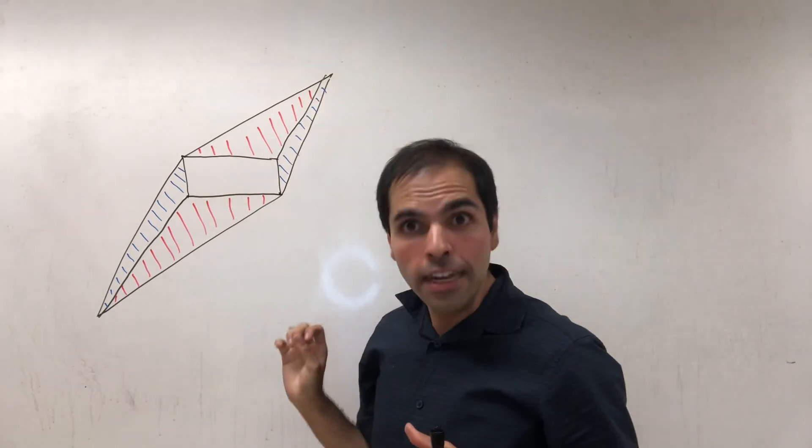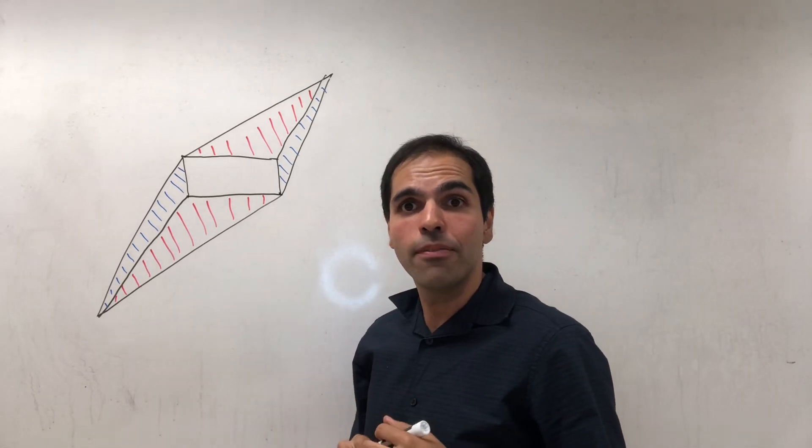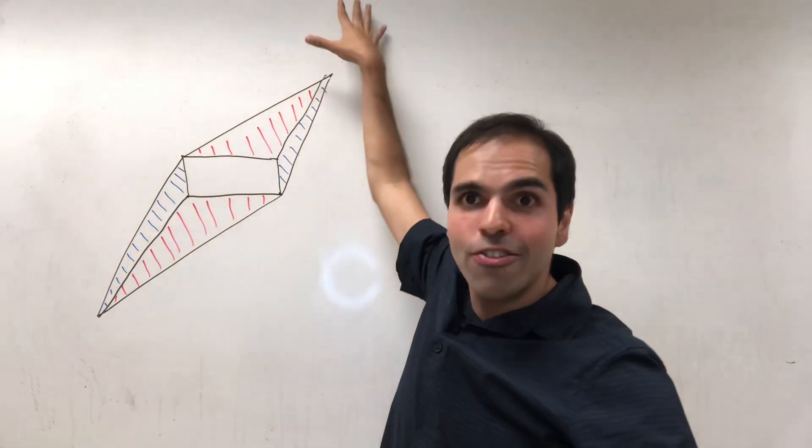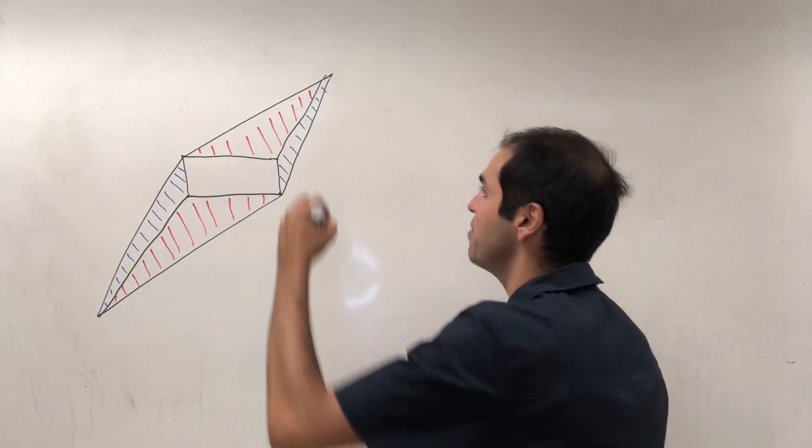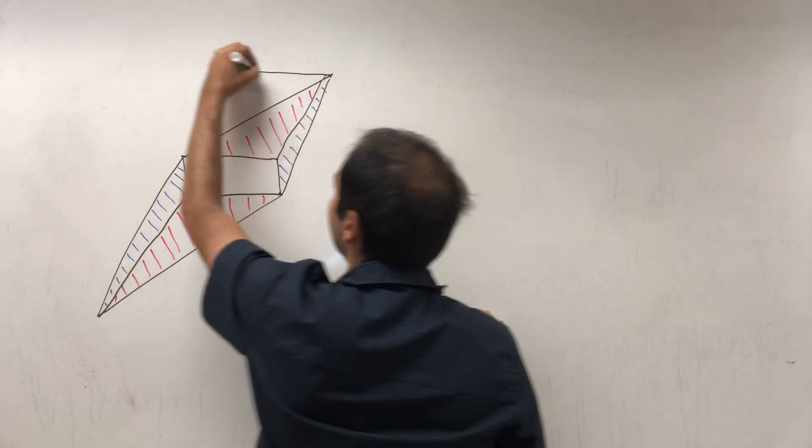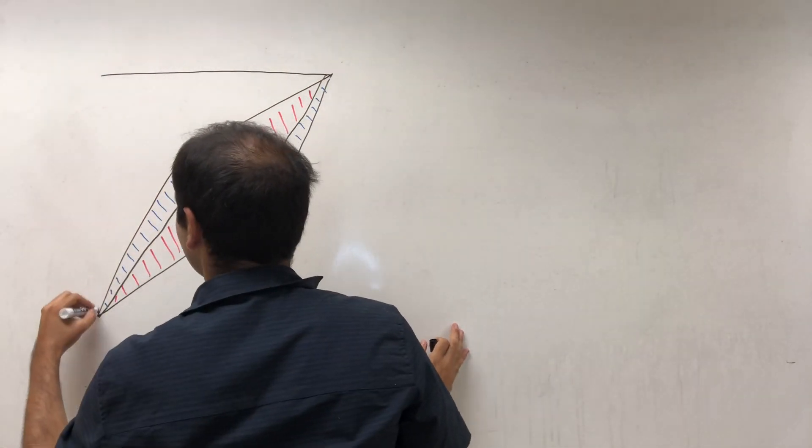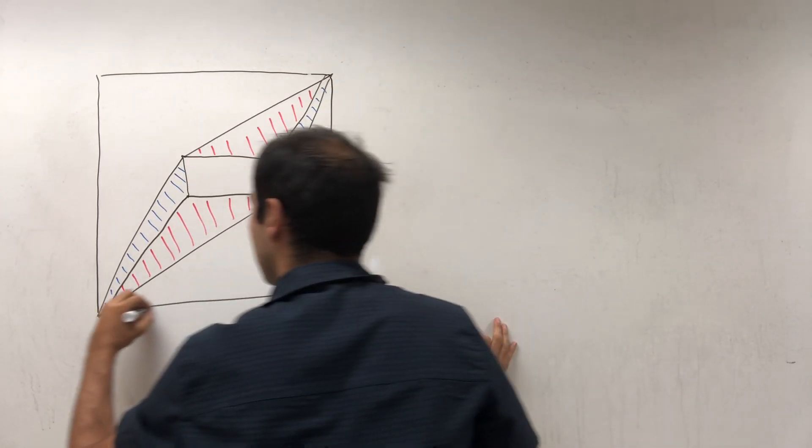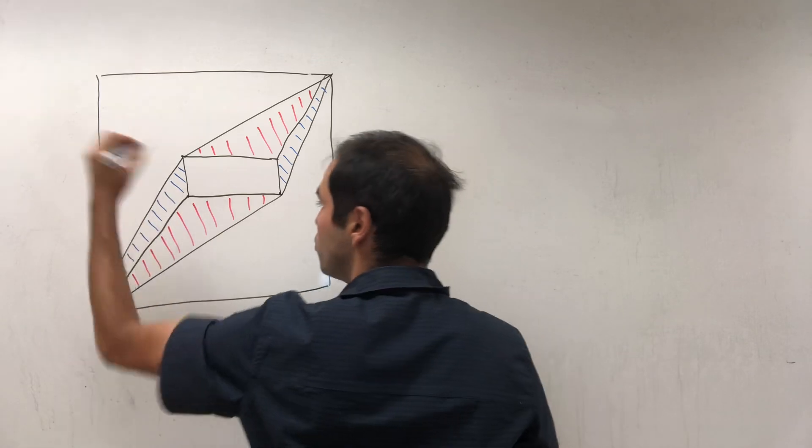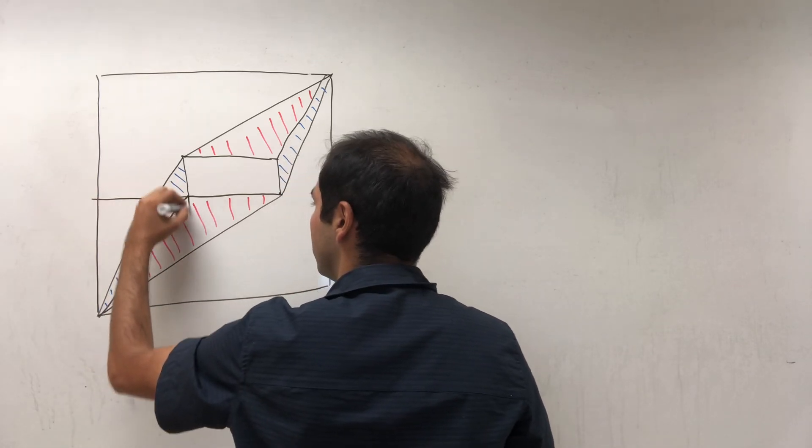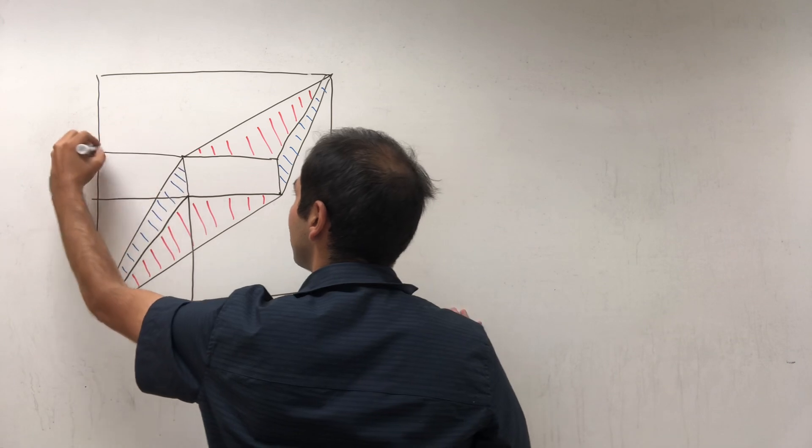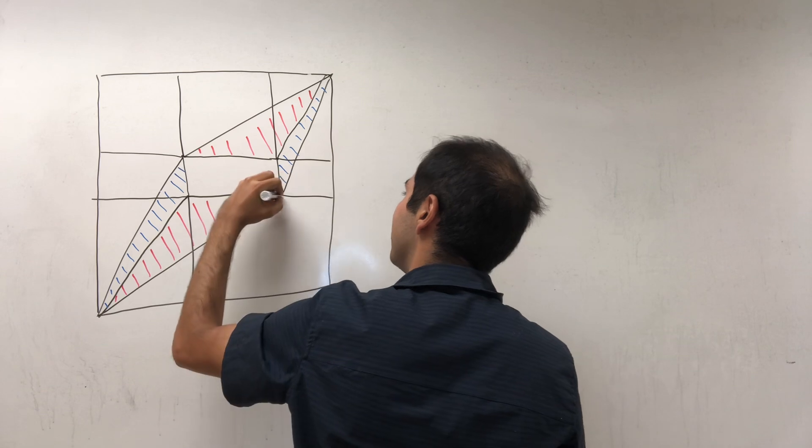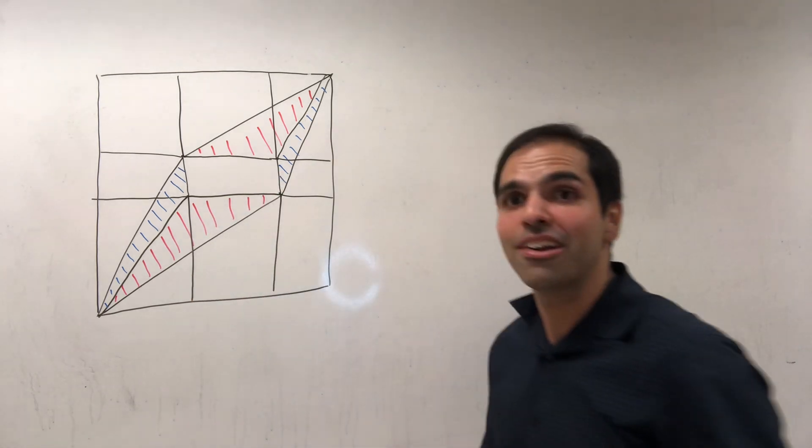And in order to do that, consider now the big rectangle that the parallelogram is inside of, maybe this one. And then chop it off into smaller rectangles as well - this one, this one, this one, and this. So I believe nine rectangles in total.